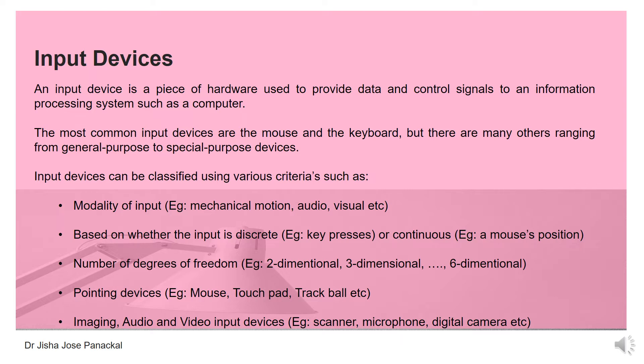For example, if it is discrete, an example is a key press; continuous means based on mouse position. Another category is based on the number of degrees of freedom — that is, we have two-dimensional, three-dimensional, up to six-dimensional devices. There is another category called pointing devices, which include mouse, touchpad, trackball, etc. We can also classify input devices based on imaging, audio and video devices — for example, scanner, microphone, digital camera, etc. These are the various criteria for classifying input devices.